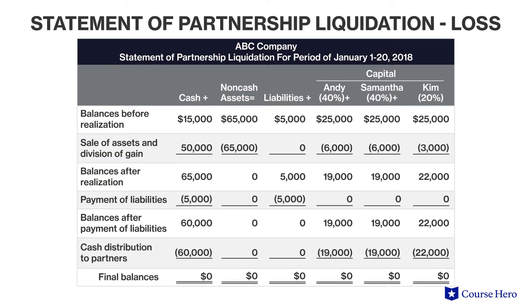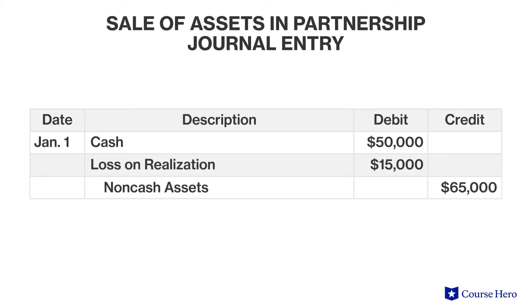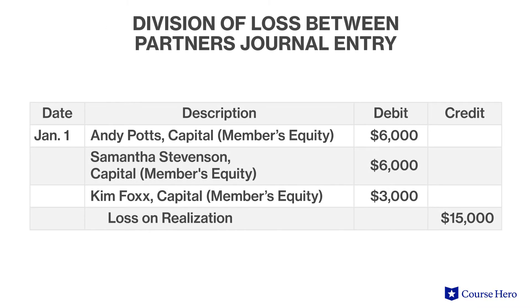The partnership will still have to pay off its liabilities of five thousand dollars, then proceed to close the capital accounts and distribute the final remaining assets. The first journal entry involves the receipt of fifty thousand dollars of cash in exchange for assets with a book value of sixty-five thousand dollars, triggering a loss of fifteen thousand dollars. The second entry involves the apportionment of the fifteen thousand dollar loss to the partners according to their distributive share.